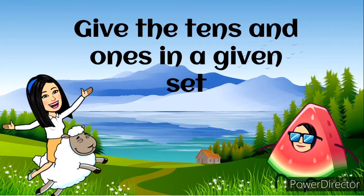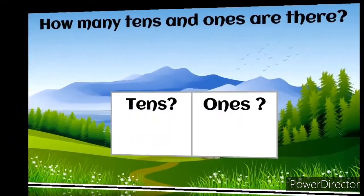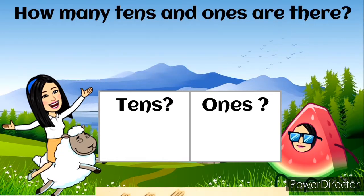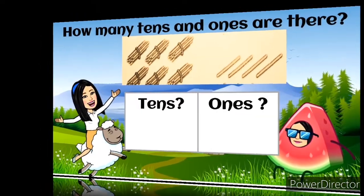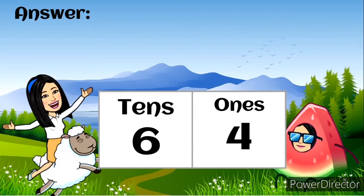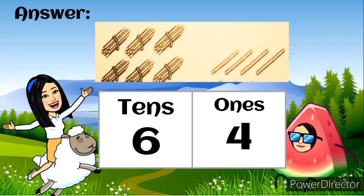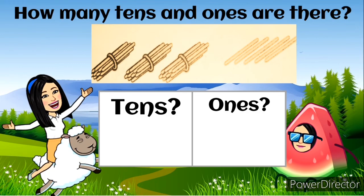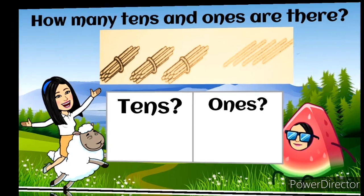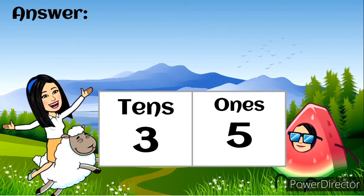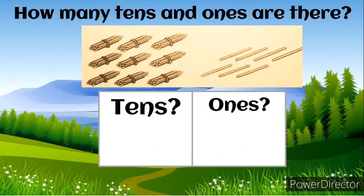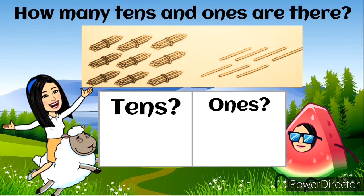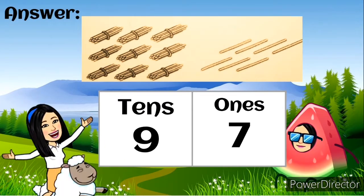Give the tens and ones in a given set. How many tens and ones are there? Great job! The answer is six tens and four ones. How many tens and ones are there? The answer is three tens and five ones. How many tens and ones are there? Wonderful! The answer is nine tens and seven ones.